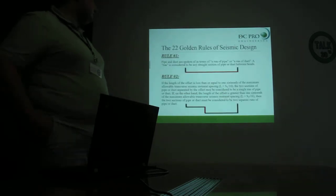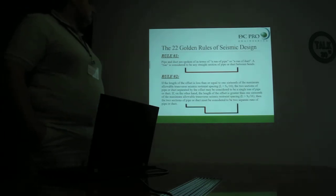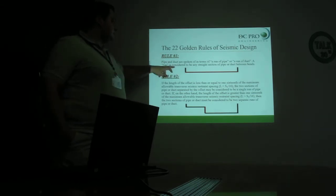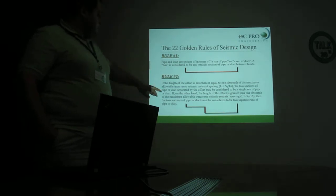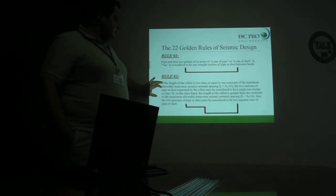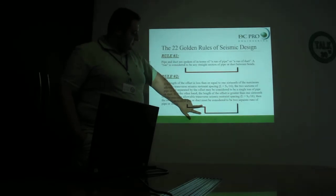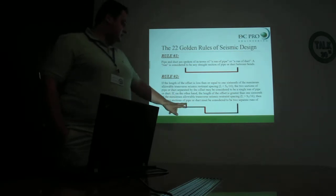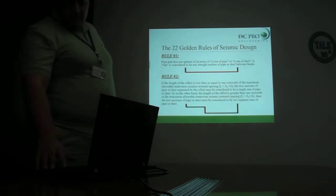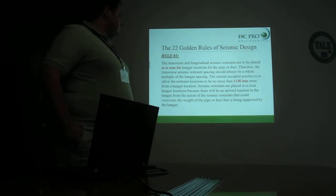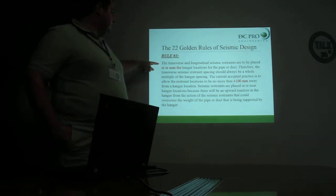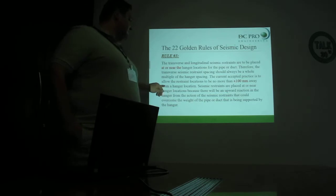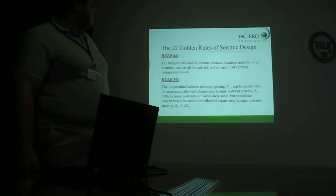There are 22 rules for seismic design. Rule number 1 defines the pipe run. Rule number 2 defines the offset, but importantly states that if the length of the offset is less than ST over 16, the two pipes could be considered as a single run and you don't need to restrain each one individually. Rule number 3 says that transverse and longitudinal restraints must be placed at or near the hanger or support locations, but no more than 100 mm away from the support.